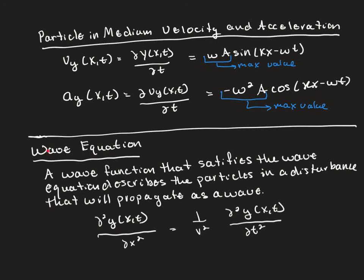The last thing to cover is the wave equation. A wave function that satisfies the wave equation describes particles in a disturbance that will propagate as a wave. You can write whatever function you want; however, for the medium to continue oscillating and propagate the wave, it must satisfy the wave equation. If we plug our wave function into both sides, we need to get 1 equals 1 — the left side must equal the right side. If that doesn't occur, our wave function does not actually describe a wave that propagates.